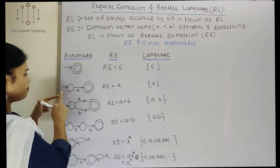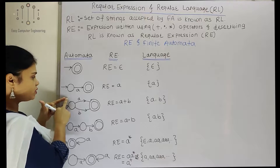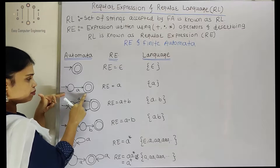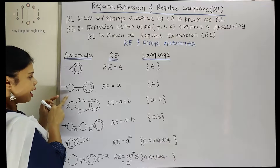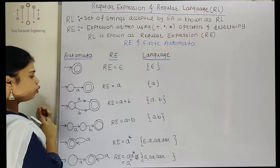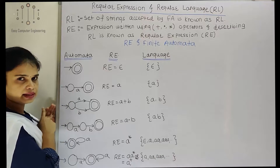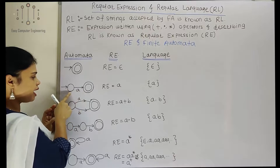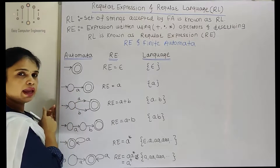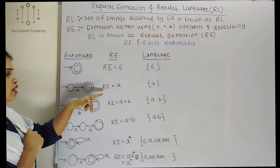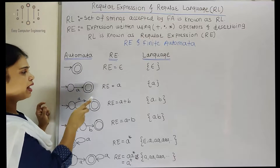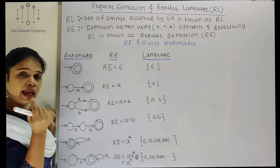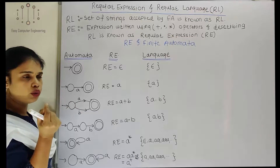If my finite automaton has one initial state and one more final state, and over there only the string 'a' is accepted — meaning from the initial state to the final state I am moving on input 'a' — then the regular expression is 'a', and the language accepts only the character 'a'.